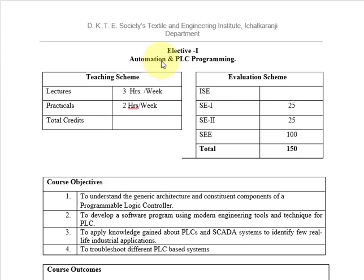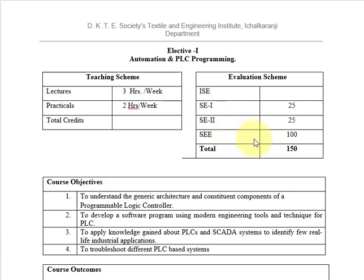Dear students, in the current semester we'll be looking at the subject Automation and PLC Programming, which is your elective number one. The teaching scheme for this subject is three hours per week and one practical per week. The evaluation scheme is: Test 1 is 25 marks, Test 2 is 25 marks, and the semester end examination is 100 marks, making a total of 150 marks.